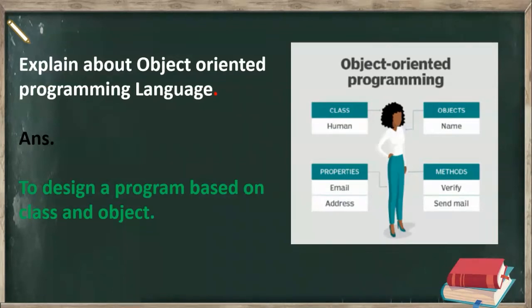So to summarize: object oriented programming means to design a program based on a class and object. For example, class 'Human' — his name is an object, and he is having some properties.